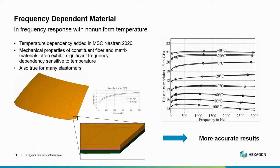Building on these improvements, engineers can now define materials based on both frequency and temperature. This means that the effects of temperature on material properties, alongside frequency considerations, can be accounted for in simulations. This enhancement is especially beneficial where the mechanical properties of fiber and matrix materials show sensitivity not just to frequency but also to temperature variations. As you can see in the schematic, the material at 20 and minus 20 degrees Celsius can have a significant difference in stiffness. This functionality is extremely important as it yields more accurate results for our analyses.